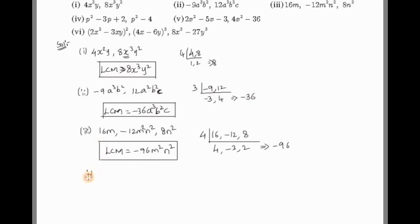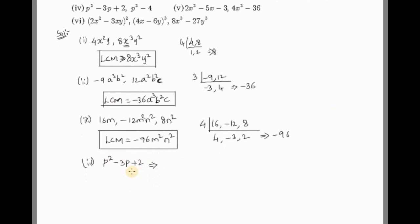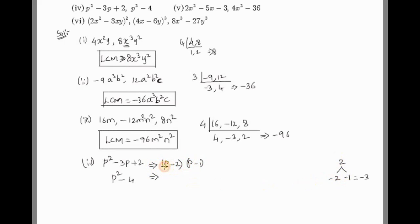The fourth problem requires factorization before finding the LCM. We have two expressions to factorize. The first expression involves p: factorize to get (p-2)(p-1) — the two numbers are -2 and -1 whose product gives the constant. So the factored form is (p-2)(p-1).